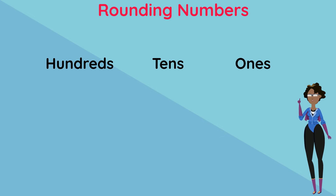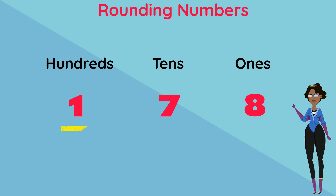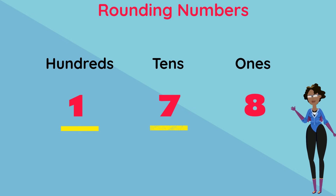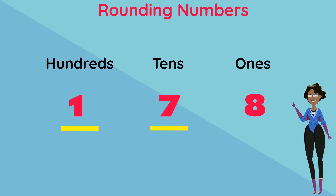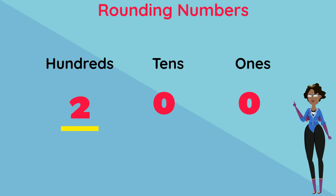Let's do an example. Let's round 178 to the nearest 100. Our 100s digit to underline is 1 and our 10s digit is 7. Since 7 is more than 5, we add 1 to our 100s number to make it 2, then replace the 10s and 1s columns with 0s. Our answer is 200.